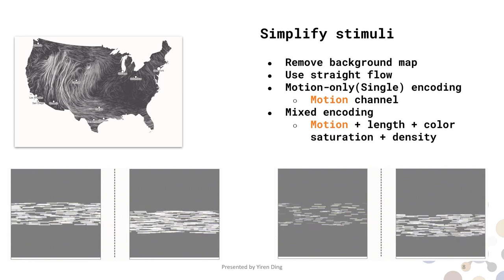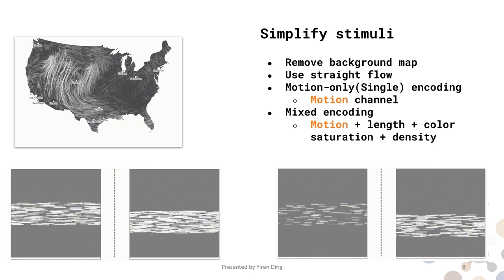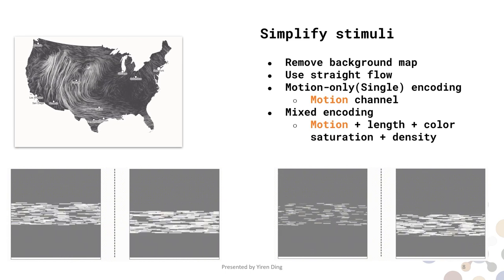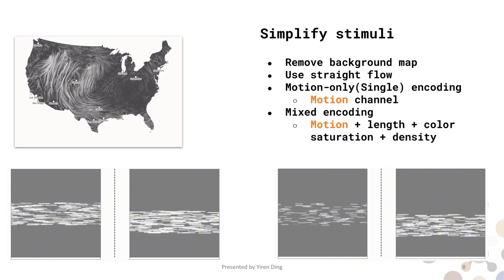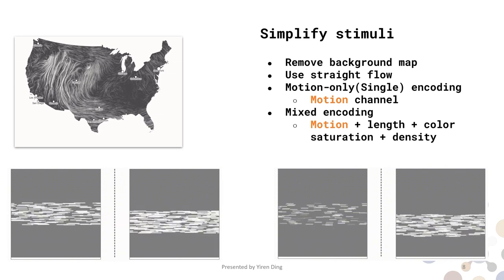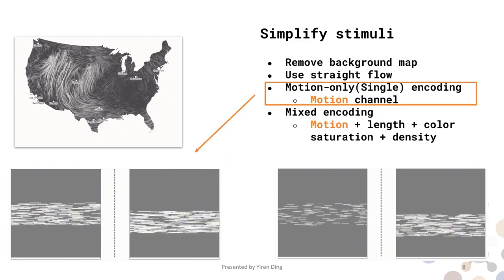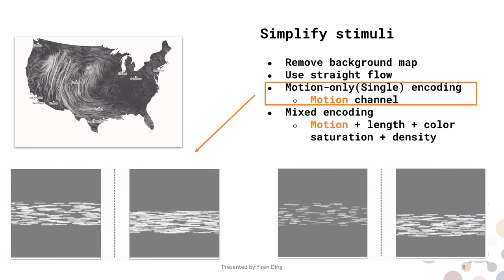Let's move to the experiment design part. We chose hint.fm as our template visualization due to its minimal design. We simplified the stimuli from hint.fm, removed background maps, and constructed straight stream stimuli in two conditions. The motion-only encoding condition, also called the single encoding condition, where the speed value is only encoded by motion without any other static channels.